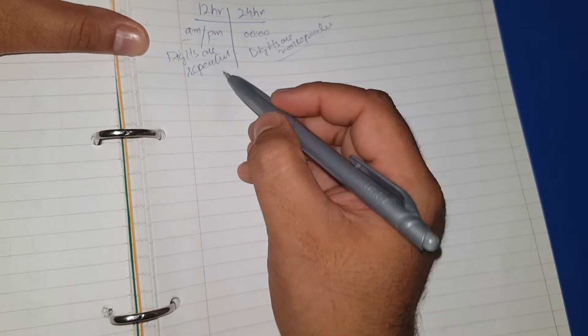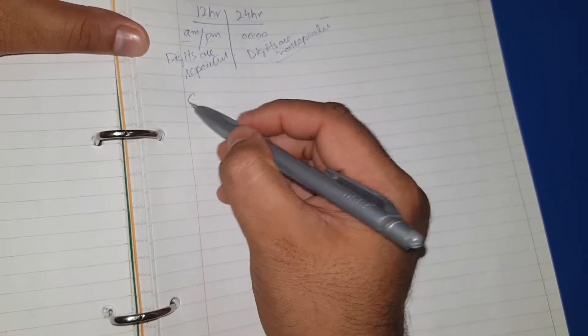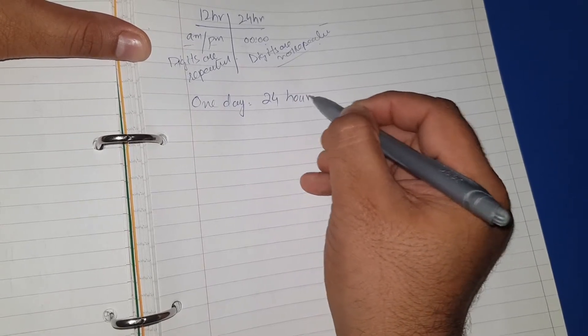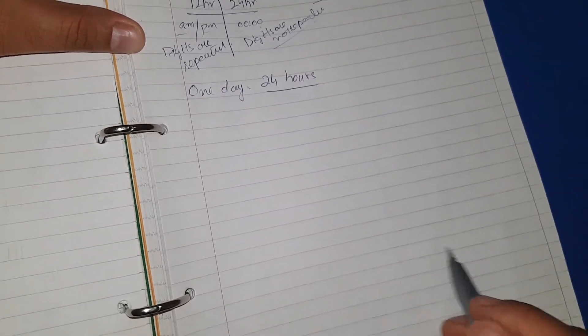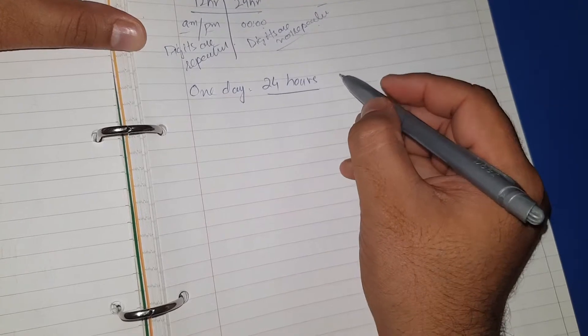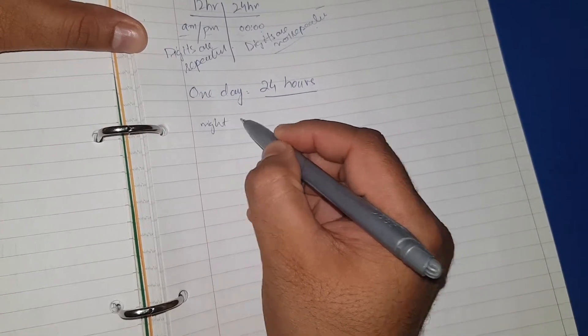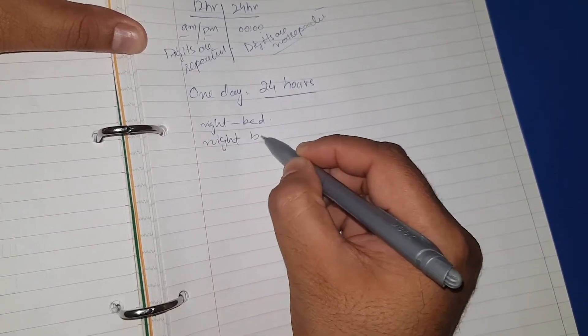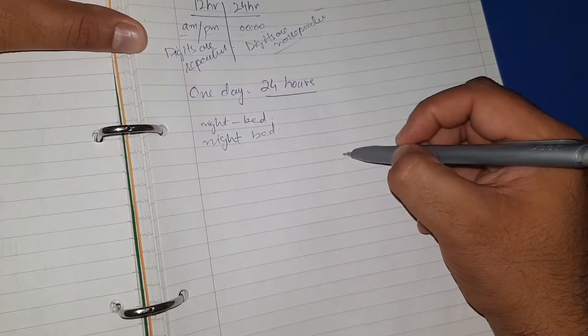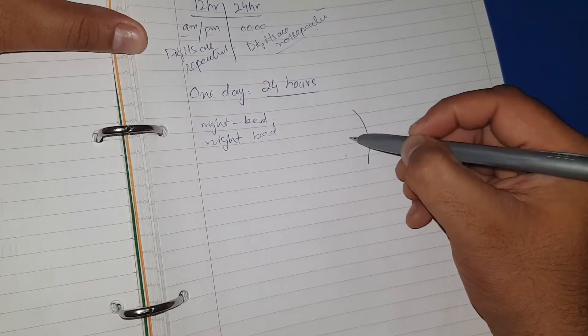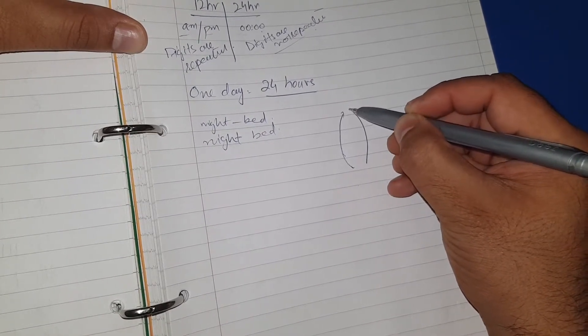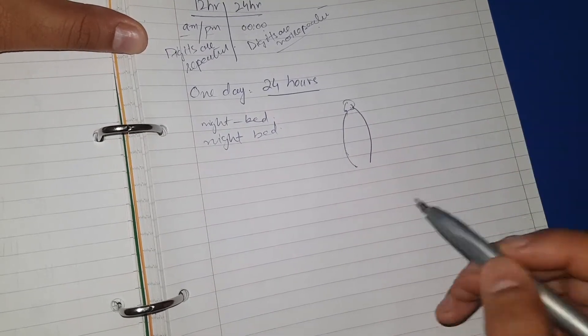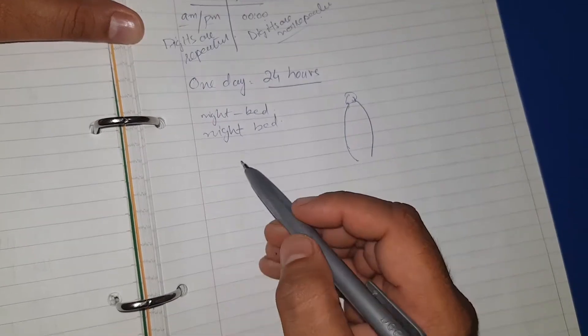In one day we have 24 hours. Our day starts in the night when we are in bed and our day ends in the night when we are in bed. So it's something that started from here and then ended again here. This is the starting point and ending point.